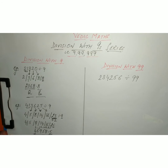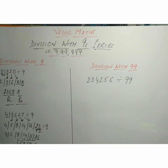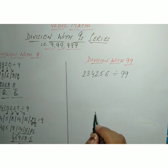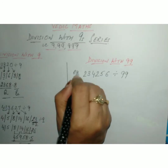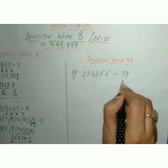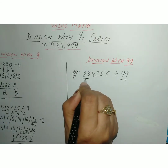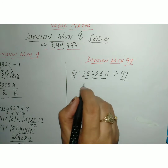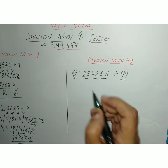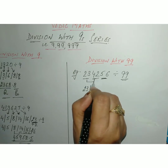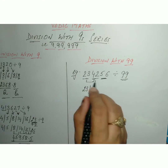Now we will learn division by 99. Let us divide 234256 by 99. Since 99 is a 2-digit number, we divide the number into groups of 2 digits: 23, 42, 56. The procedure is the same as before. We write the first group, 23, as it is. Then we add 23 to 42, which gives 65.